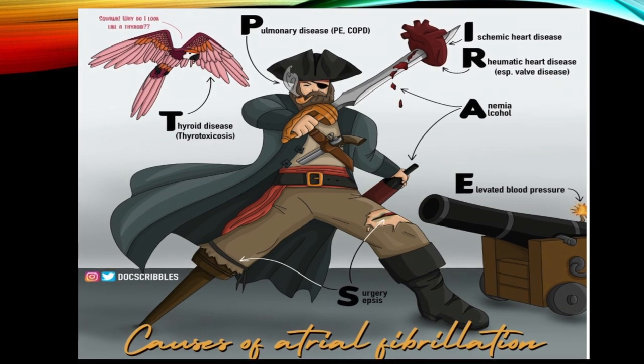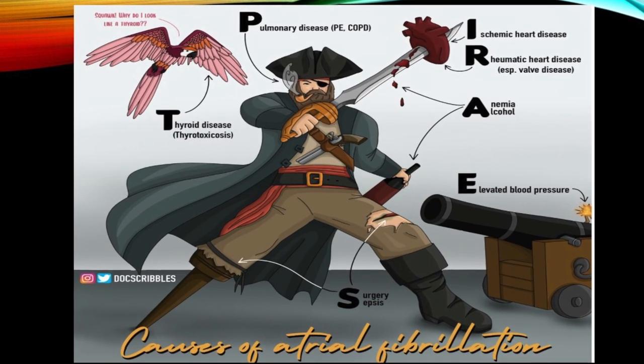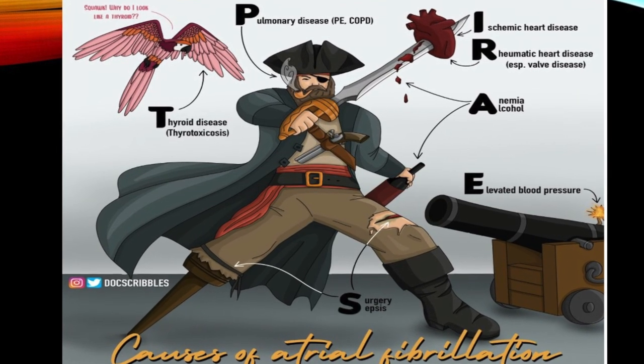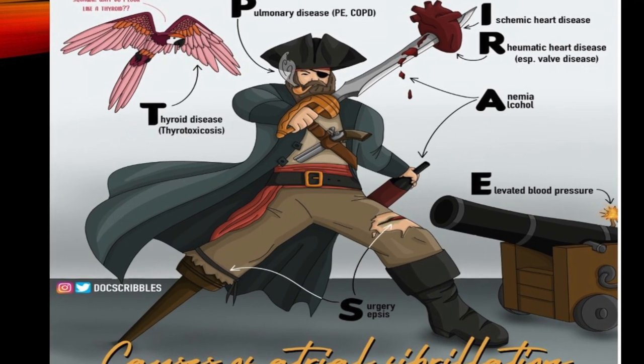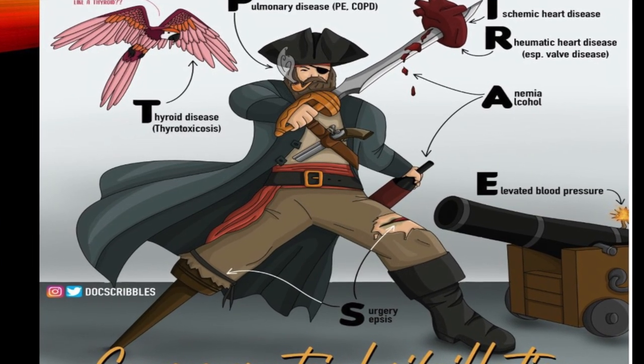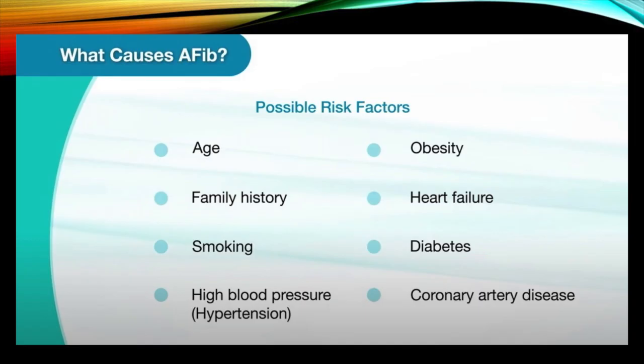We also have systemic disease as causes. The most common cause of atrial fibrillation is high blood pressure — hypertension. But diabetes, obesity, sleep apnea, and even thyroid disease — specifically hyperthyroidism, when the thyroid gland in your neck is overactive — can all lead to atrial fibrillation.